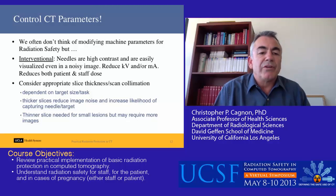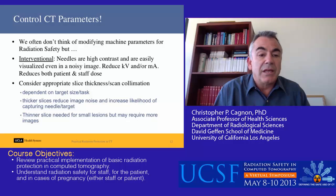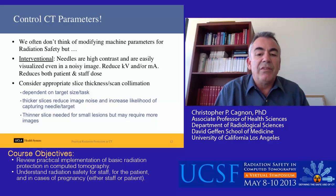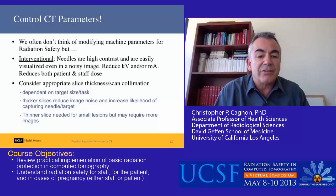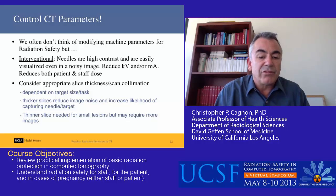We often don't think about modifying machine parameters for radiation safety for the staff. Keep in mind that for interventional procedures, if you're using needles — which are very high contrast objects easily visualized even in a noisy image — this allows you to reduce the kV and/or the mA, reducing both patient and staff dose. You should also consider appropriate slice thickness and scan collimation for your imaging task, dependent on the target size. Thicker slices reduce image noise, allowing less mAs and increasing likelihood of capturing the needle and target, but you may need thinner slices for small lesions.